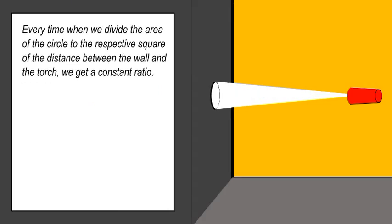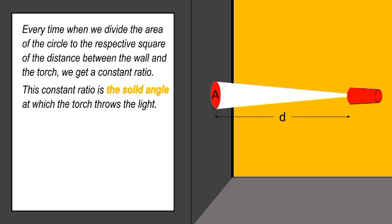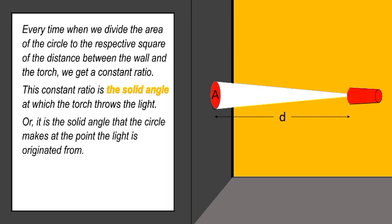Every time when we divide the area of the circle to the respective square of the distance between the wall and the torch, we get a constant ratio. This constant ratio is the solid angle at which the torch throws the light. Or it is the solid angle that the circle makes at the point the light is originated from.